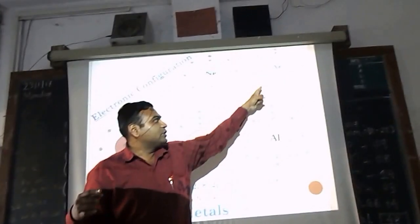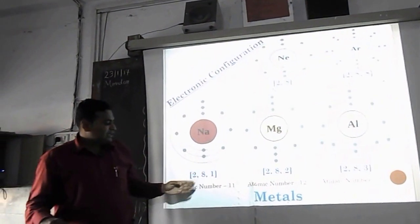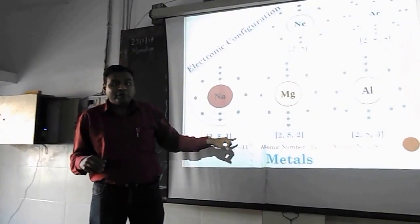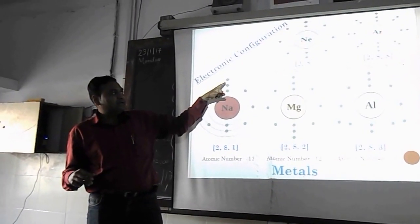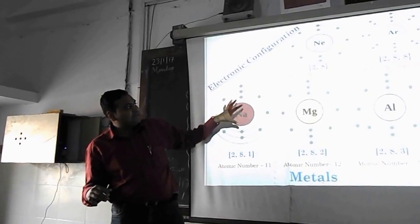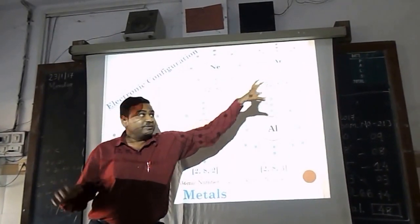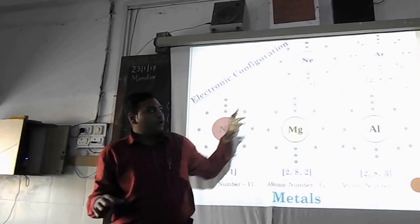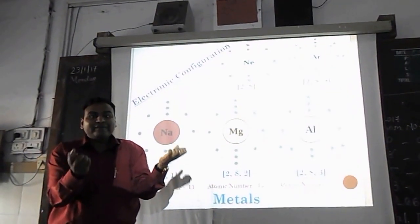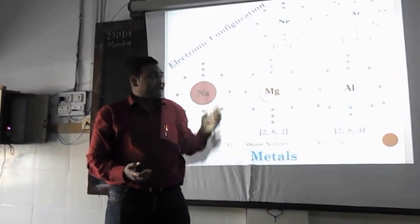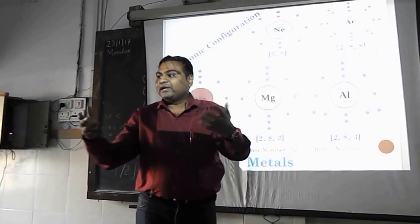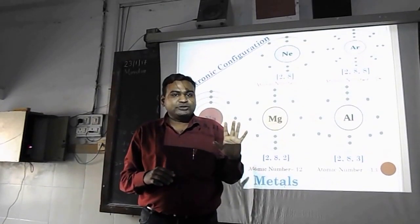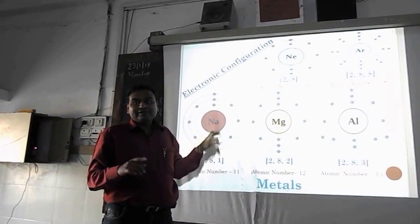Now let's take the example of sodium. Its atomic number is 11 and it has one electron in the outermost orbit, with electronic configuration 2-8-1. It needs to achieve a configuration like neon or argon to become stable. To become like neon it has to lose one electron, or to become like argon it has to gain 7 electrons. Gaining 7 electrons is very difficult, so it will lose one electron. When sodium loses that one electron it converts into Na⁺, carrying a +1 charge. This is considered a metallic property.